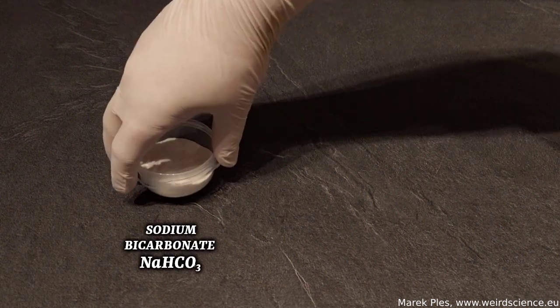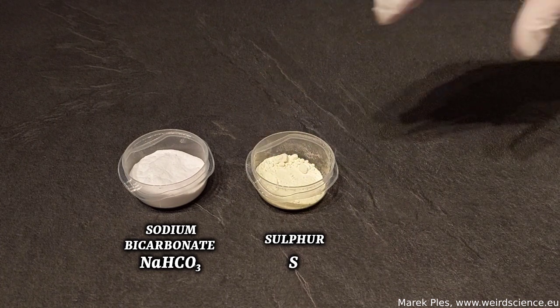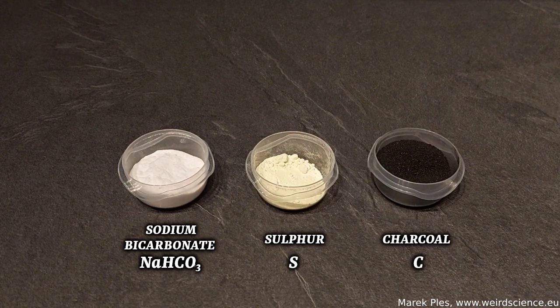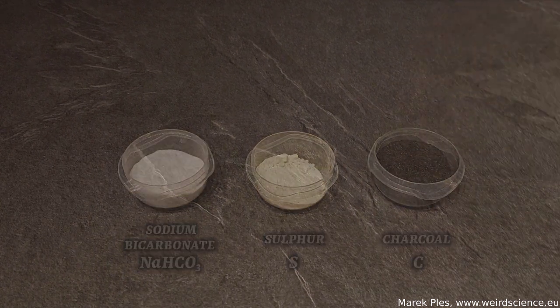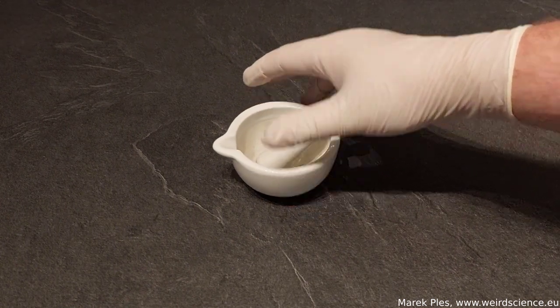To prepare the pyrotechnic mixture we only need sodium bicarbonate, also known as baking soda, sulfur, and charcoal. The best choice is charcoal obtained through the pyrolysis of pine wood. Each chemical must be dried before mixing. None of the ingredients are flammable or explosive.